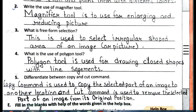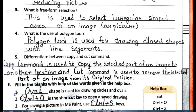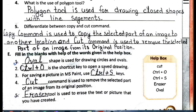Next exercise is Fill in the Blanks. Some words are given below in a help box; choose the word and fill in the blanks. First blank: dash shape is used for drawing circle and oval. The answer is Oval shape.